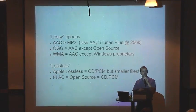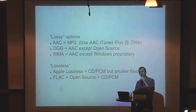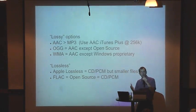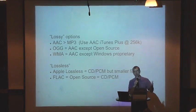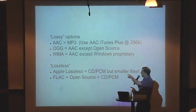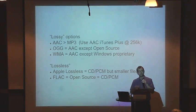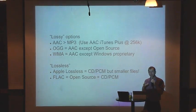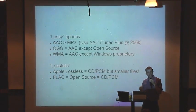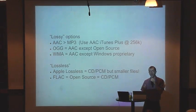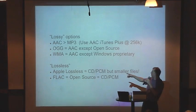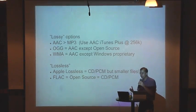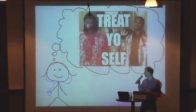For iTunes settings: use iTunes Plus at 256k AAC — it will sound almost as good as your CDs and most people will never hear the difference. OGG Vorbis is similar to AAC and open source, but few phone players support it. WMA is Windows' proprietary version but not widely supported. For lossless options: FLAC and Apple Lossless compress PCM without losing any information, roughly halving the file size while preserving a perfect copy.